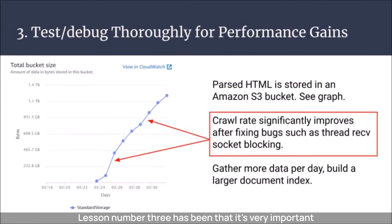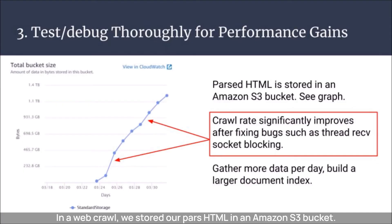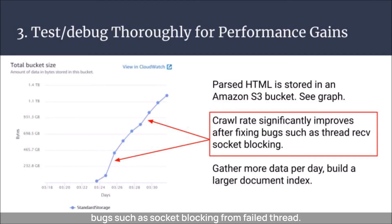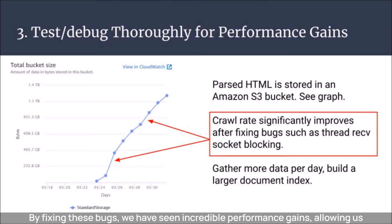Lesson three: it's very important to test and debug thoroughly for performance gains. In a web crawl, we store our parsed HTML in an Amazon S3 bucket. The crawl rate is significantly improved by fixing bugs such as socket blocking from failed thread receive calls on websites that are down. By fixing these bugs, we have seen incredible performance gains, allowing us to gather more data per day and ultimately build a larger document index.